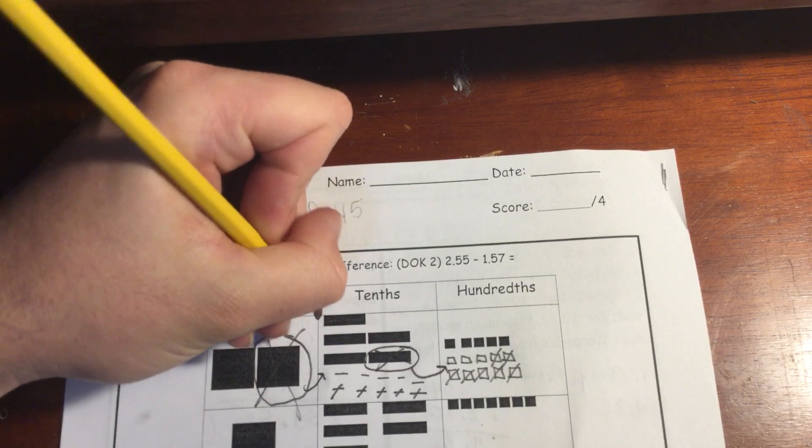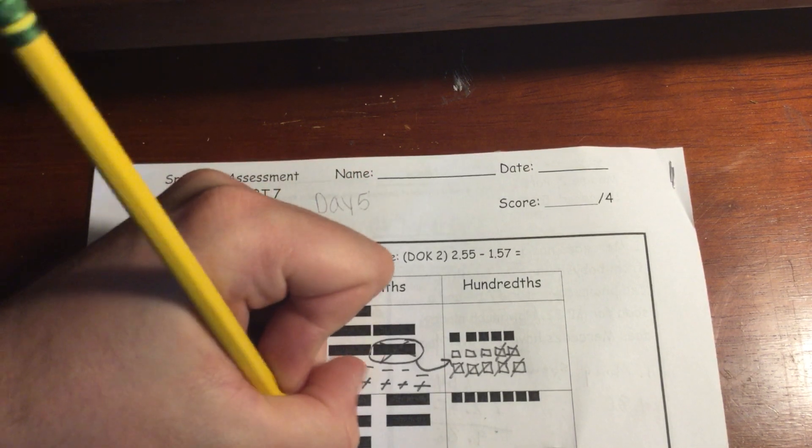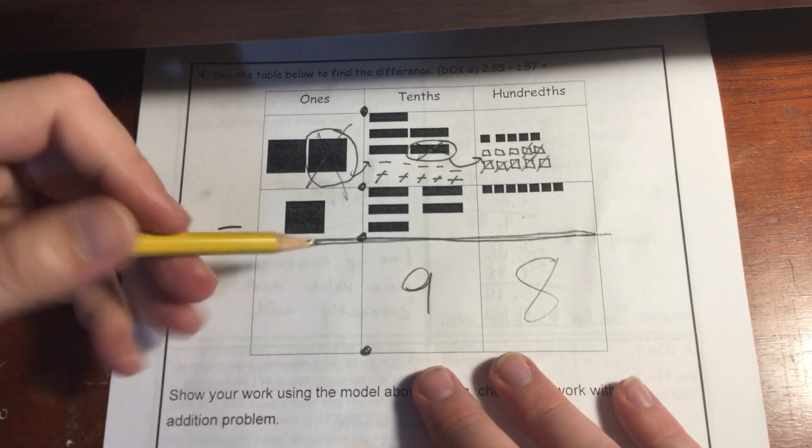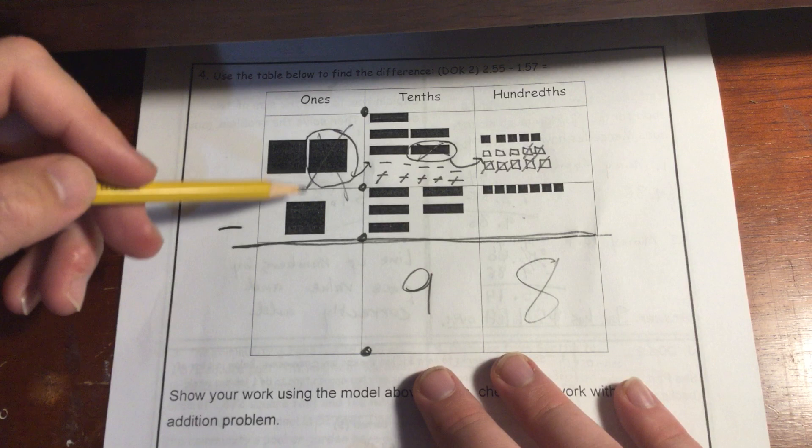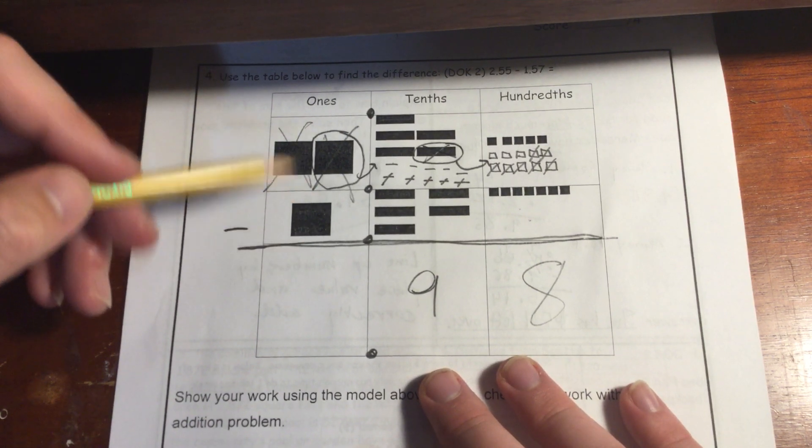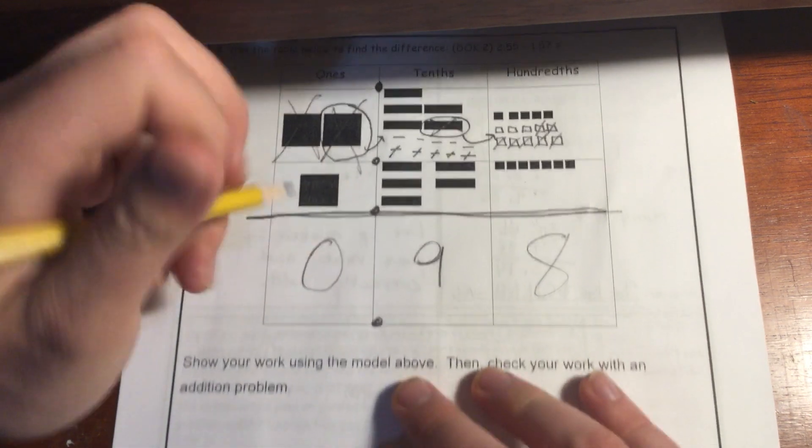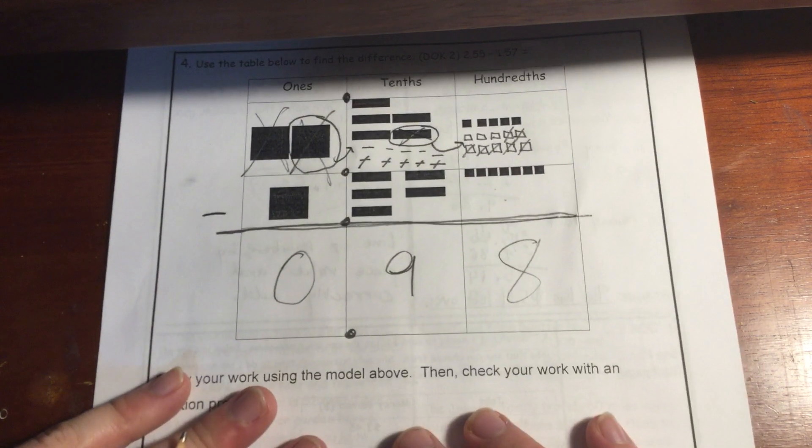One thing I forgot to do is I'm going to add a decimal point on each one of these numbers, including in my difference down here. And then simply we have one minus one. We can take one away from one, crossing that one out. I'm left with zero up top. So my answer is going to be 98 hundredths.